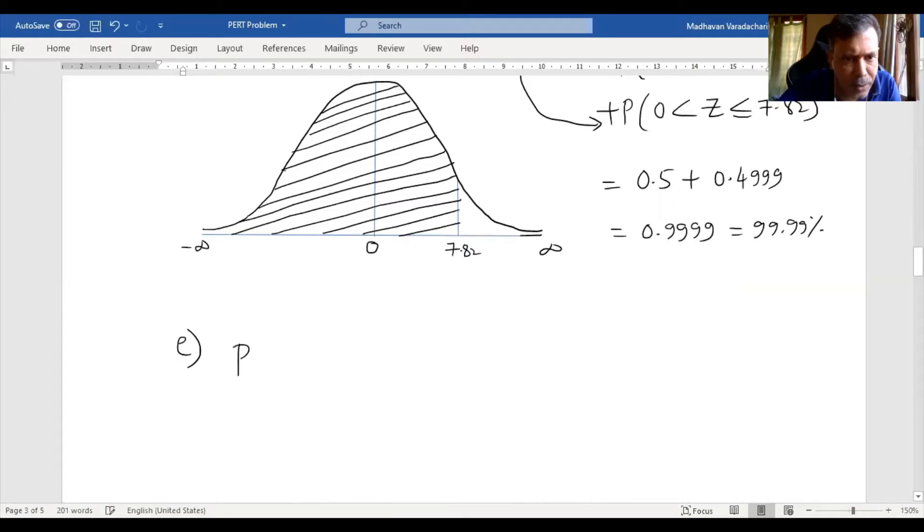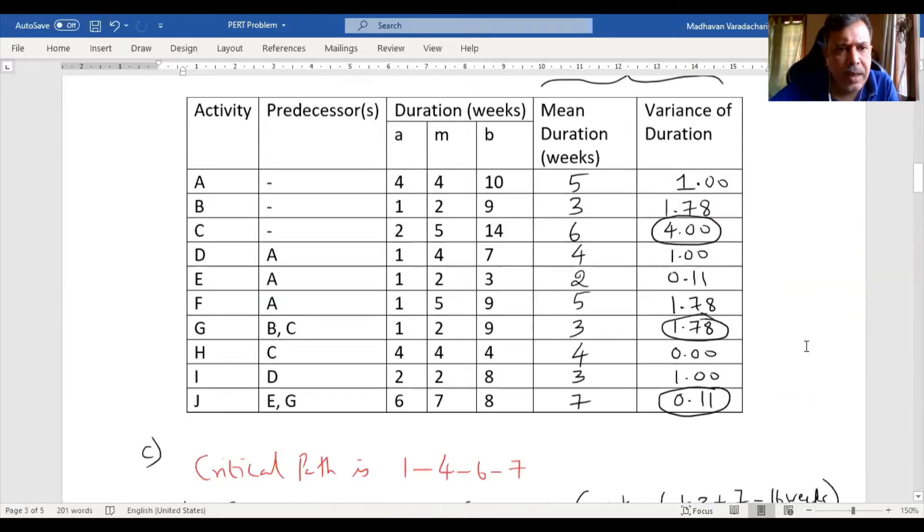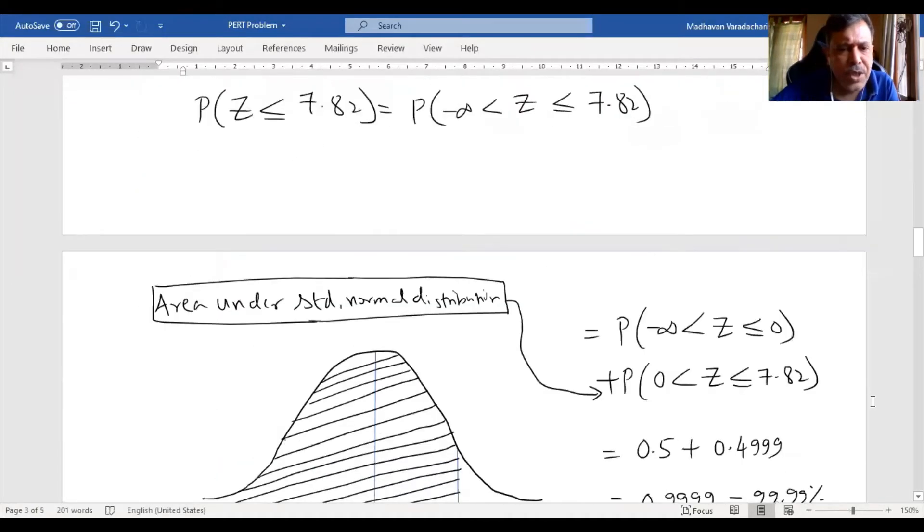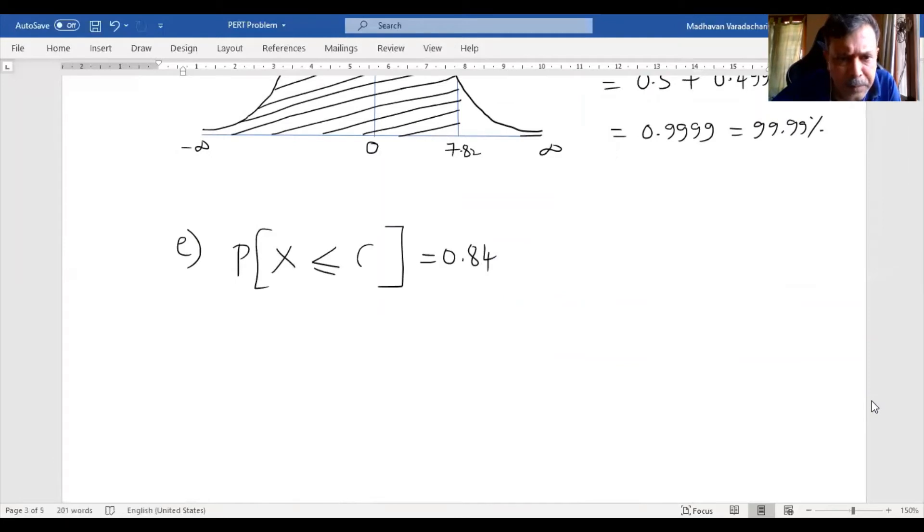Question E, the probability is known. We are supposed to find what is the duration. Probability is given as 0.84. We are supposed to find the duration, which we will consider as capital C. We will use the standard normal conversion.